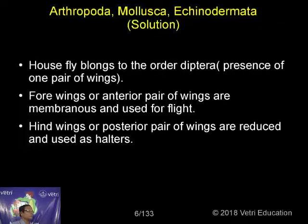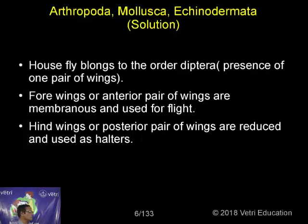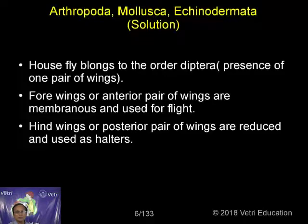The order name Diptera refers to the presence of one pair of wings. In mosquito, housefly, and Drosophila, we have one pair of wings. The forewings are membranous and used for flight, while the hind wings — the posterior wings — are reduced and used as halteres while the animal is landing after flight.